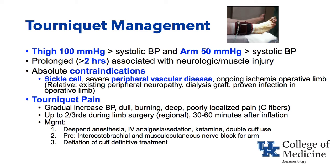If the tourniquet is inflated for an extended period — classically greater than two hours — neurologic or muscle injury can occur. Absolute contraindications to a tourniquet include sickle cell disease, where ischemic tissue causes hemoglobin sickling and a sickle crisis can occur, and severe peripheral vascular disease. Ongoing ischemia in the operative limb is also a contraindication. Relative contraindications include preexisting peripheral neuropathies, a dialysis graft in that limb, and a proven infection in the operative limb.